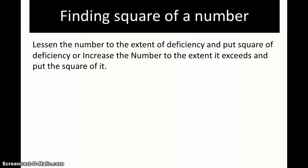We are going to see the technique to find the square of a number near to numbers like 1000, 100, or 10,000. The rule says: lessen the number to the extent of deficiency and put the square of the deficiency, or increase the number to the extent it exceeds and put the square of it.